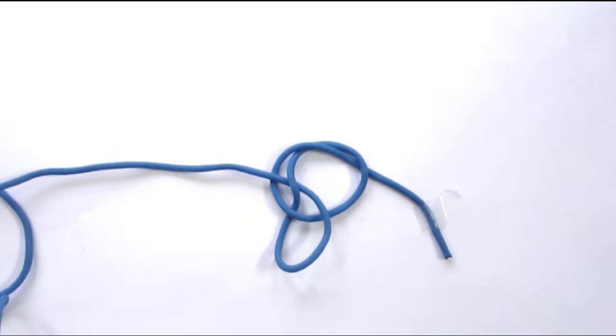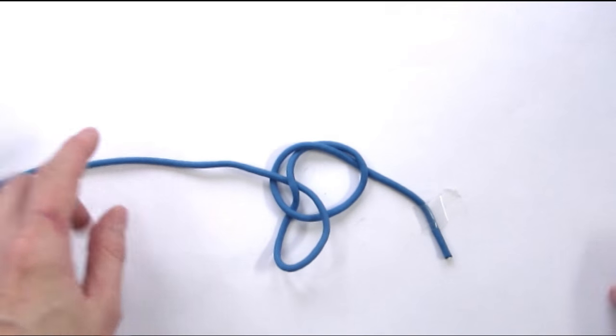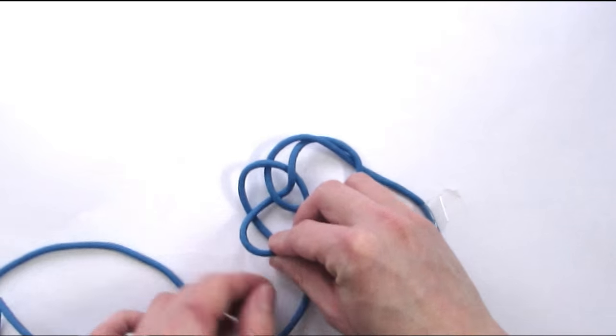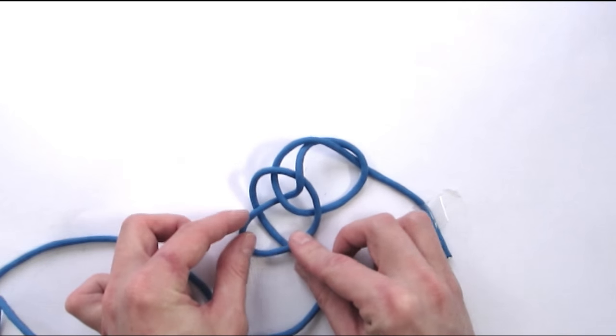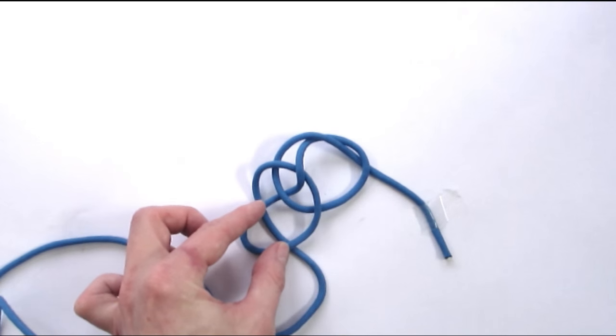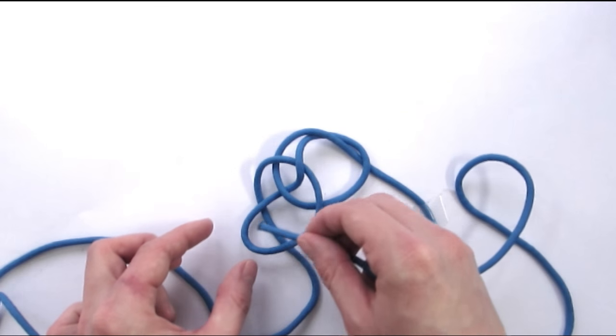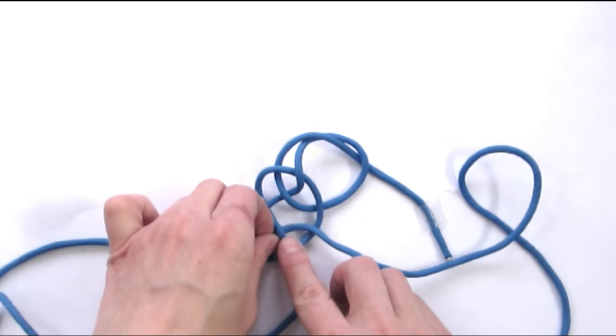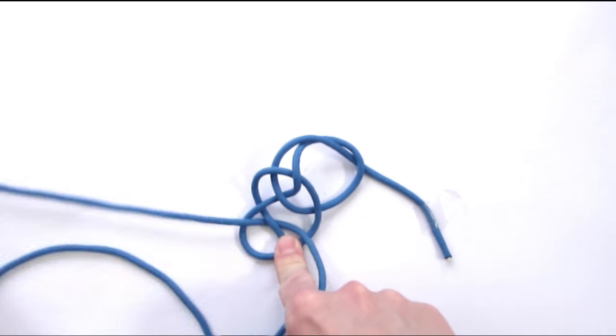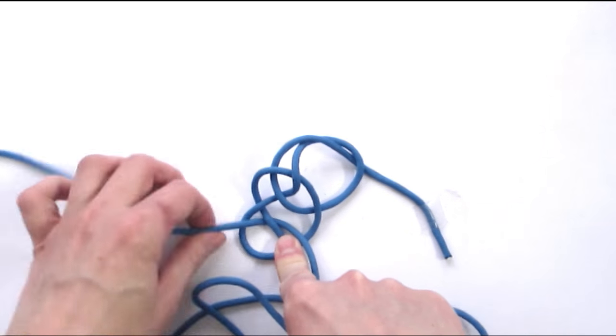We're now going to again take our working end and pass it under this loop, under two again. With our working end, we're again going to go over, under, over. And this completes our third loop that we made so far.